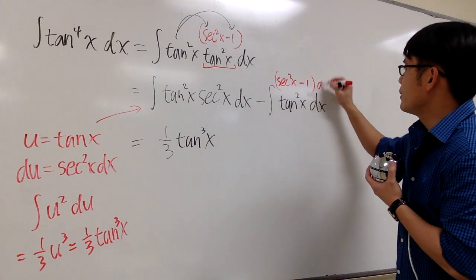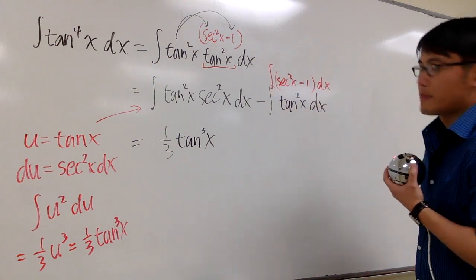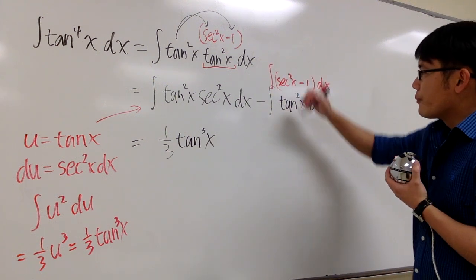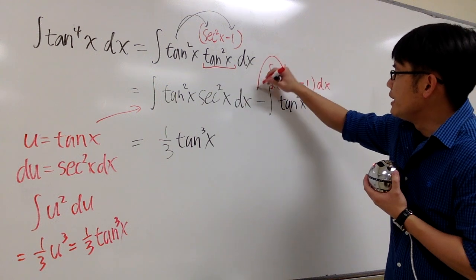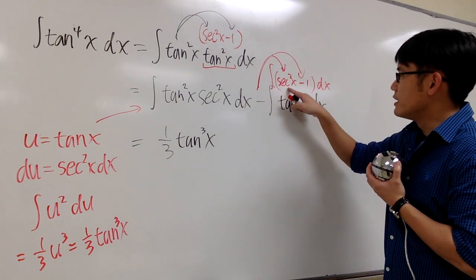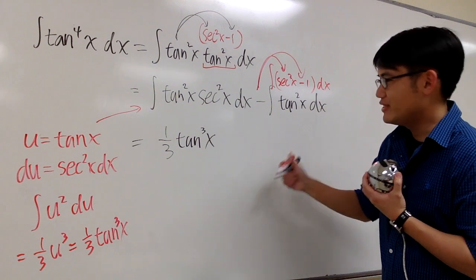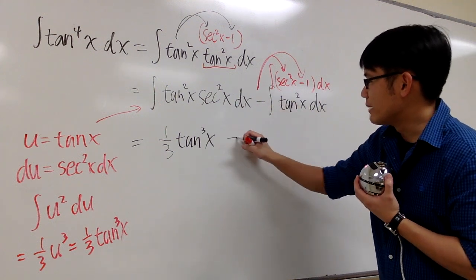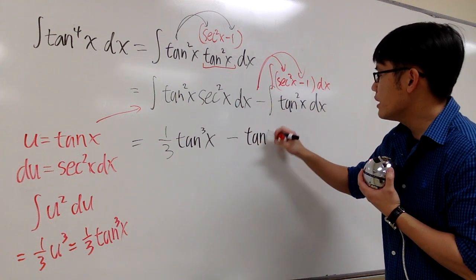Okay, and then this is technically instead of the integral. So don't forget to distribute the negative into the parentheses, and let's work out the integral. What's the integral of secant square? The answer to that is tangent, and that's a minus, so it's minus tangent x.